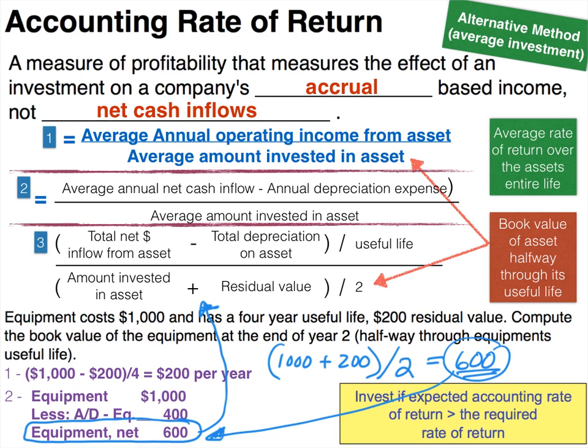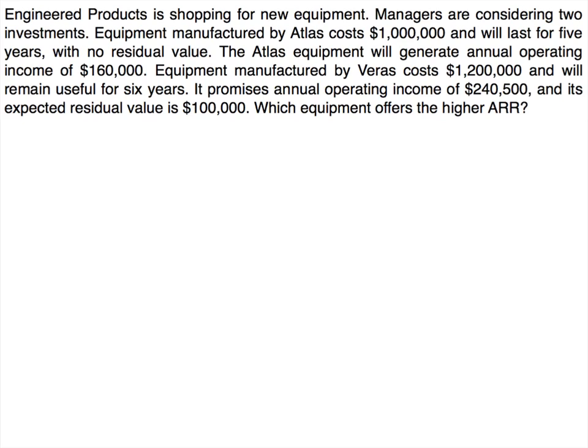Now let's try an example. Engineered Products is considering two equipment investments. Atlas costs $1 million, lasts five years, no residual value, and generates annual operating income of $160,000. Veras costs $1.2 million, lasts six years, has annual operating income of $240,500, and an expected residual value of $100,000. Which equipment offers the higher ARR? Pause the video and use the original method to calculate the accounting rate of return for each.